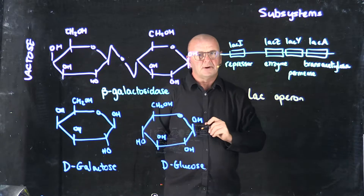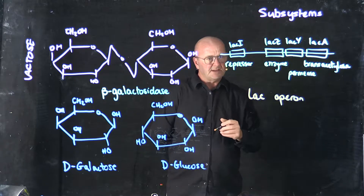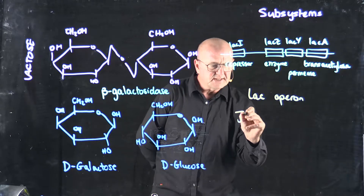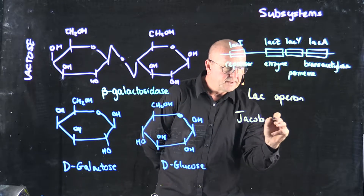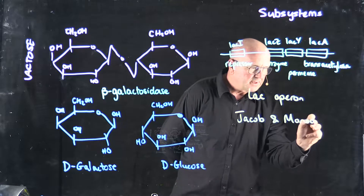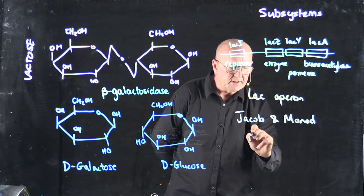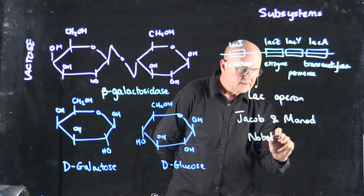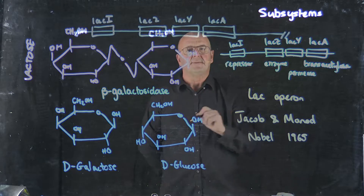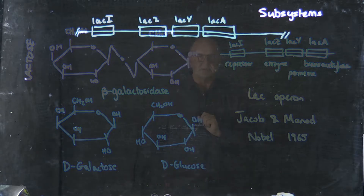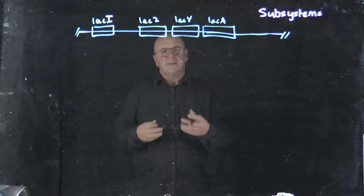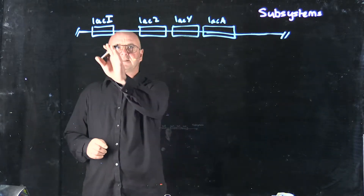The LAC operon was discovered in the 1940s and 1950s by two scientists, Jacob and Monod, and they won the Nobel Prize in 1965 for this work. The LAC operon contains these four genes: LACI, LACZ, LACY, and LACA.